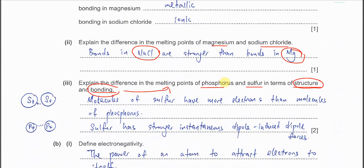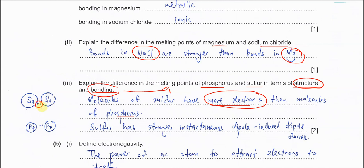Molecules of sulfur have more electrons than molecules of phosphorus, because S8 has eight atoms while P4 has only four atoms. More electrons means a larger molecule, and a larger molecule means stronger intermolecular forces. S8 is the larger molecule, so between molecules it has stronger id-id forces — instantaneous dipole-induced dipole forces.